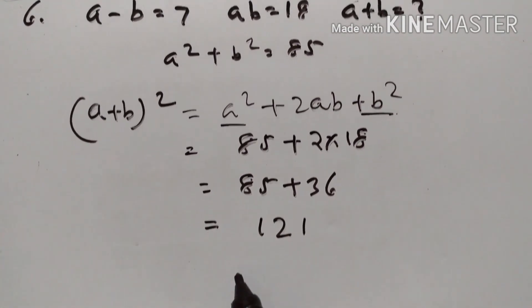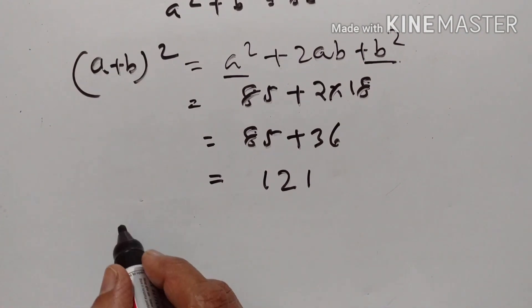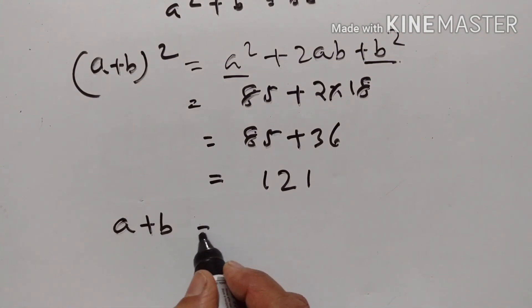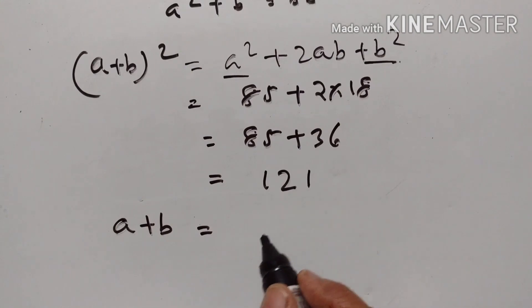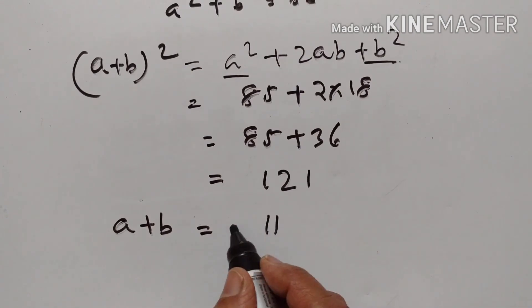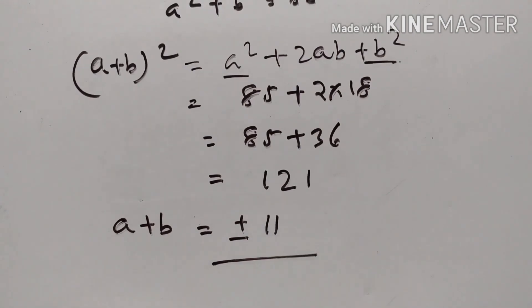85 plus 36 is equal to 121. Taking the square root on both sides, we get A plus B = √121 = plus or minus 11.